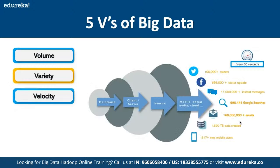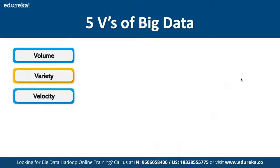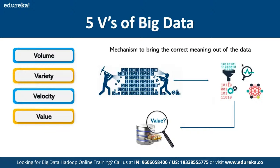The third V is Velocity — the rate at which data is currently being generated. Mainframe, client-server, internet, mobile, and social media platforms are all generating a humongous amount of data on a per-second basis. We need systems capable of handling this volume of data that is growing at an exponential rate, and that is what big data handles.